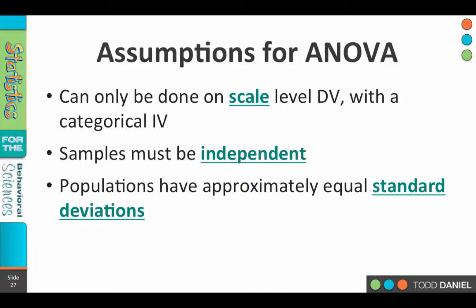The first assumption is that the data being used for your dependent variable are at the scale level — in other words, we're measuring something that can be put onto a scale that runs with equal intervals — and that our independent variable is categorical. Let's say three different groups: group one, group two, and the control group. That's categorical; you belong in one group or the other. You can't belong in two or more groups.